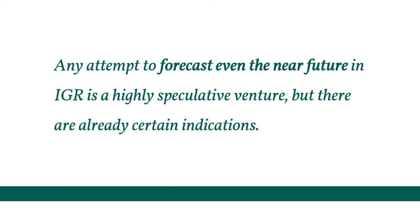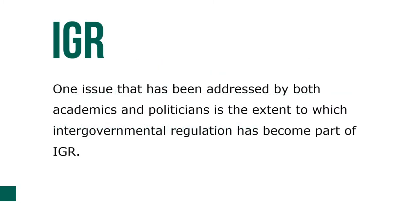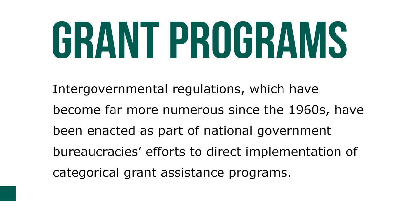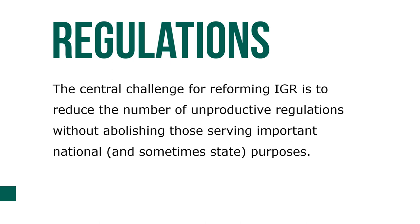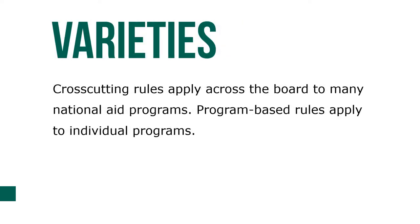Any attempt to forecast even the near future in IGR is a highly speculative venture, but there are already certain indications. One issue addressed by both academics and politicians is the extent to which intergovernmental regulation has become part of IGR. Intergovernmental regulations, which have become far more numerous since the 1960s, have been enacted as part of national government bureaucracy's efforts to direct implementation of categorical grant assistance programs. The central challenge for reforming IGR is to reduce the number of unproductive regulations without abolishing important national and state purposes. Cross-cutting rules apply across the board to many national aid programs, while program-based rules apply to individual programs.